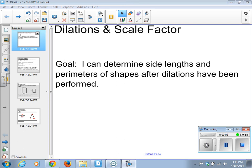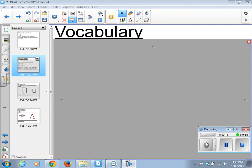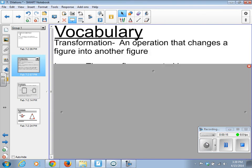Today we're looking at dilations and scale factor. Our goal is to determine the side lengths and perimeters of shapes after dilations have been performed. Our vocabulary today is pretty important. We have a transformation. This is an operation that changes a figure into another figure. It transforms the figure.